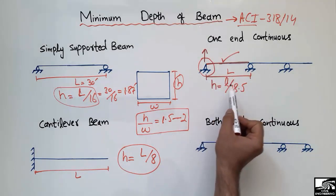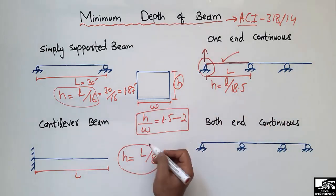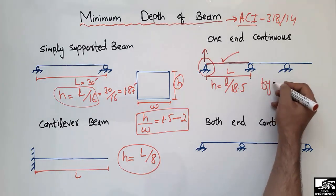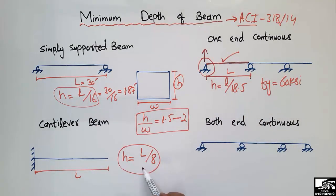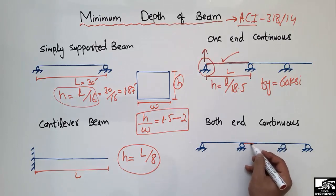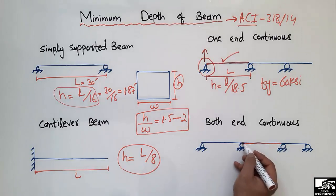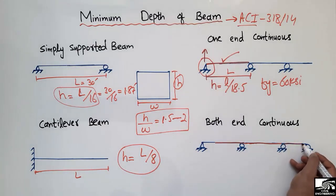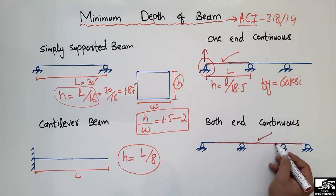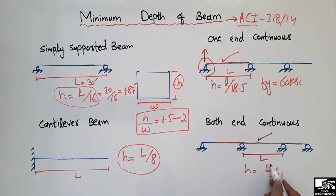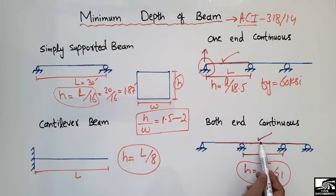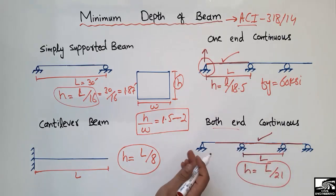Note that all these minimum depth formulas apply to Grade 60 ksi reinforcement steel. For a both-ends continuous beam — supported and continuous at both ends — the minimum depth equals L/21. Dividing the span length by 21 gives the minimum required depth for this beam type.